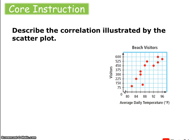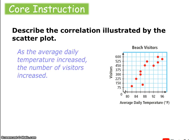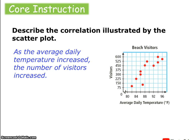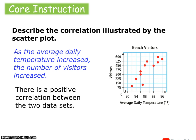We're going to describe the correlation illustrated by the scatter plot. This one is titled Beach Visitors, comparing the number of visitors to the average daily temperature. As the average daily temperature increased, the number of visitors increased — which matches our logic, since the hotter it is, the more people go to the beach. This would be a positive correlation.